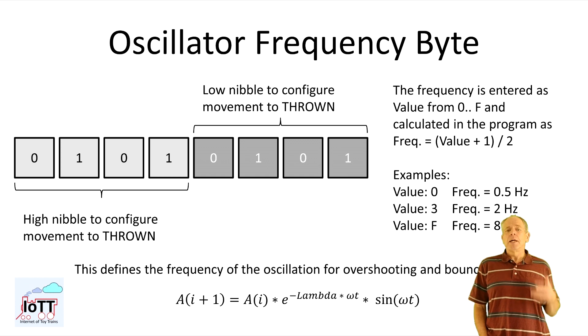Higher values mean a quicker oscillation. And as with lambda, the frequency is calculated from a value of 0 to hex f or 15, resulting in an oscillation frequency of 0.5 to 8 Hz. I find that a frequency value of 5 which results in a 3 Hz oscillation is probably the most realistic setting. But do as you wish.